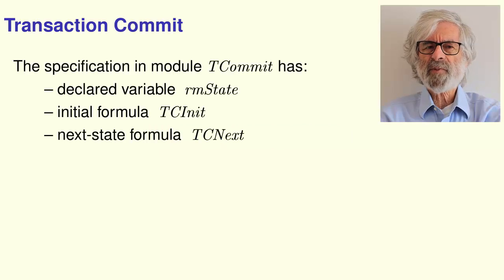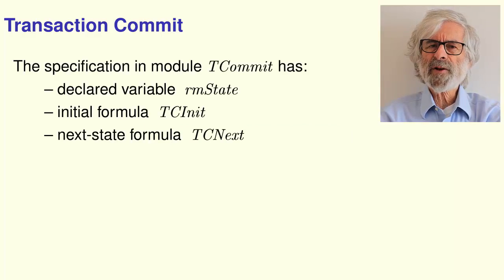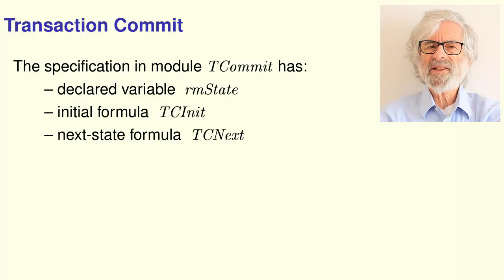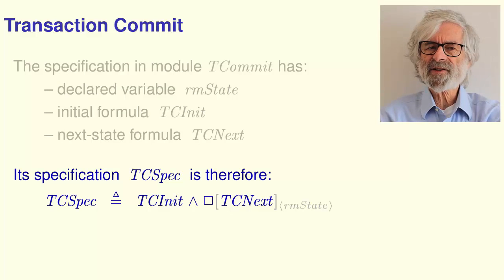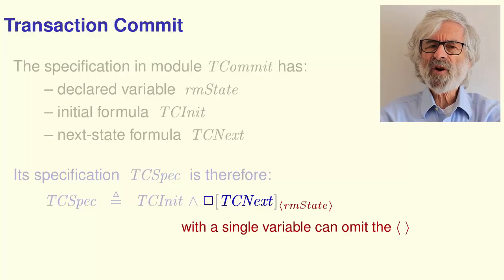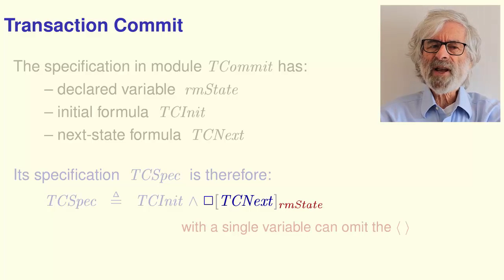Remember the transaction commit spec? It was in module TCCommit and had a single declared variable RMState, an initial formula TCInit, and the next state formula TCNext. Its specification is therefore the temporal formula TCSpec defined like this. Because it has only a single variable, we can omit the angle brackets and write the subscript simply like this.